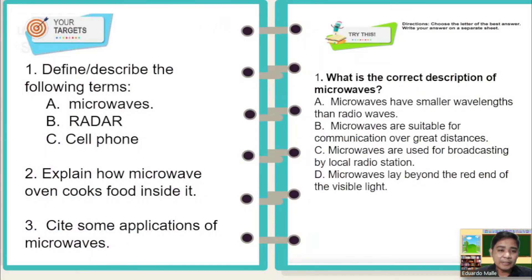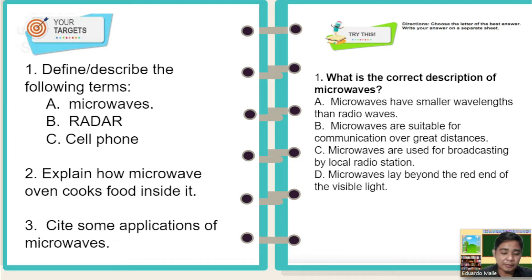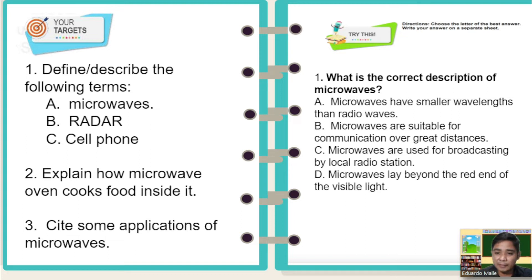Our targets or objectives in this lesson: Number one, define or describe the following terms — A: microwaves, B: radar, C: cell phone. Number two, explain how a microwave oven cooks food inside it. And number three, cite some applications of microwaves.